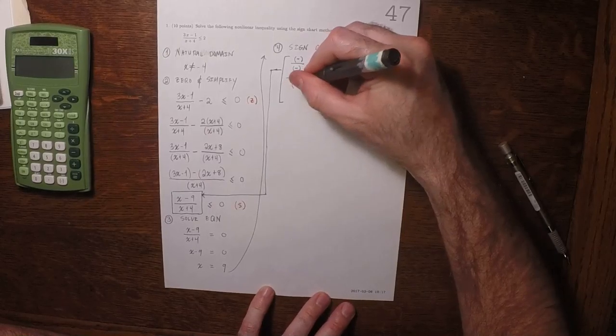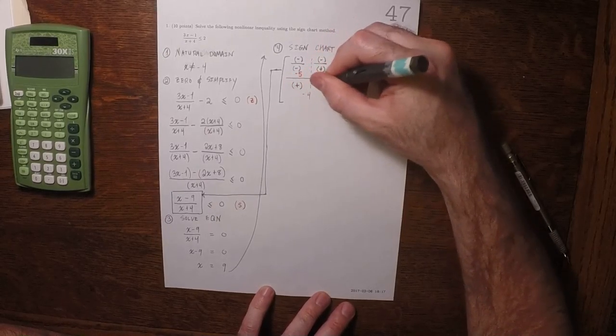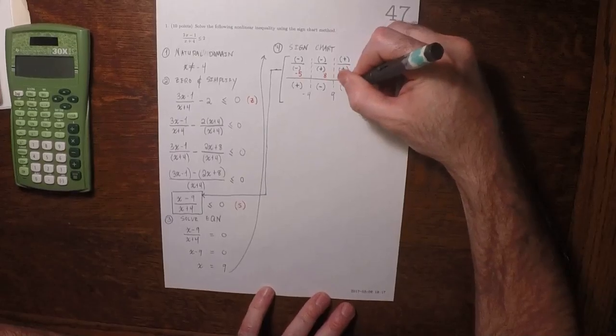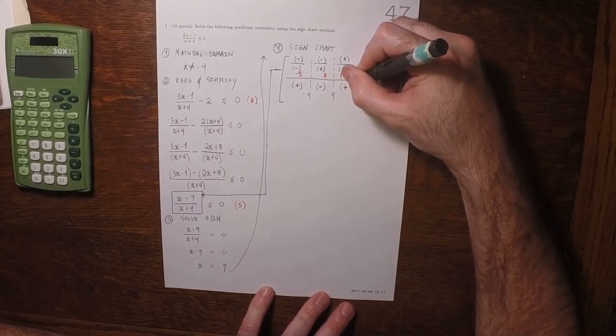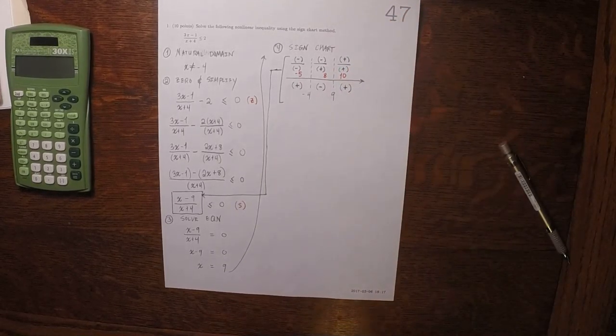The overall sign in each region is positive, then negative, then positive.